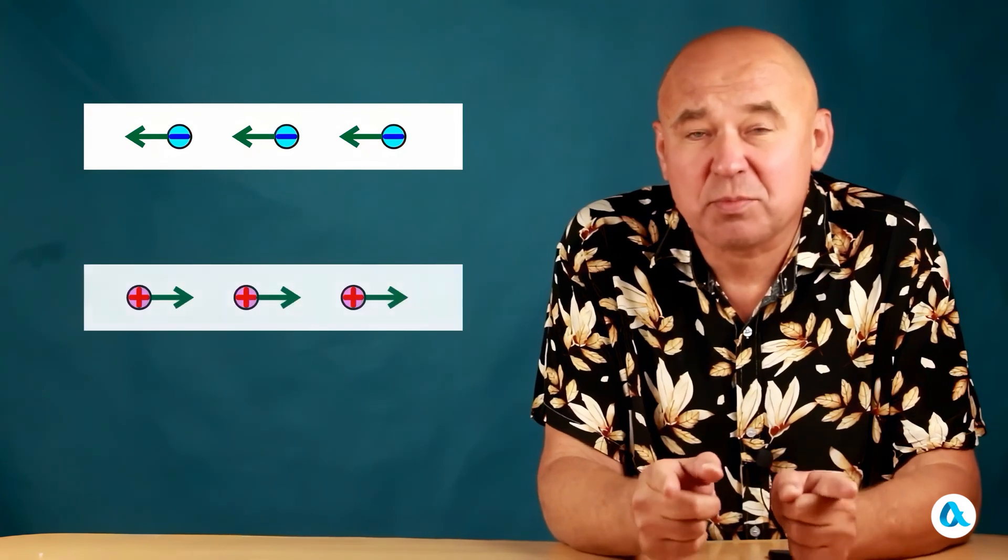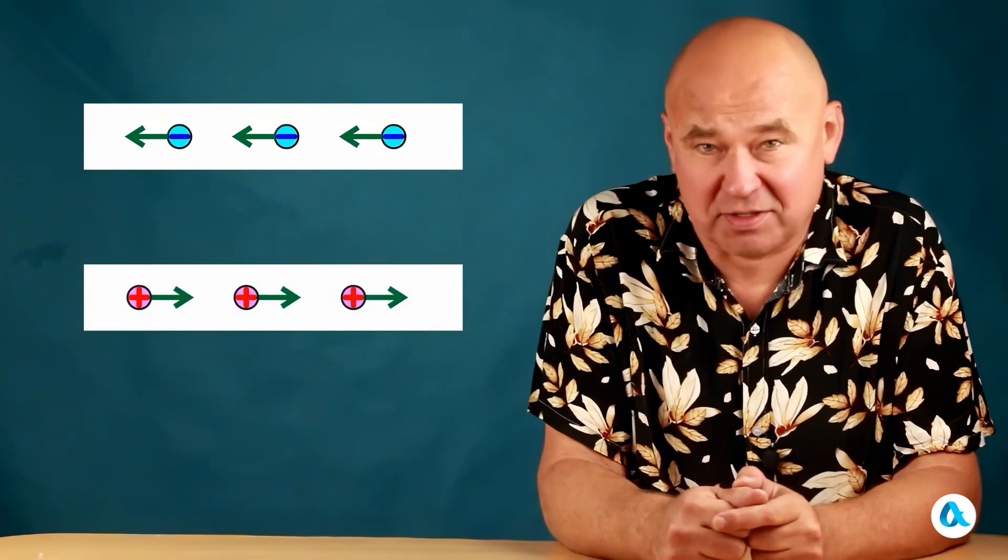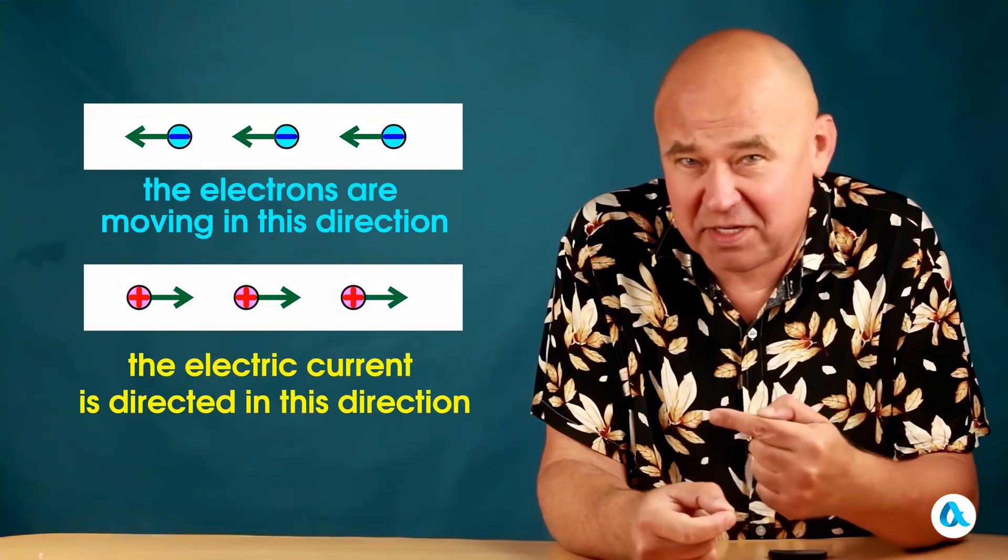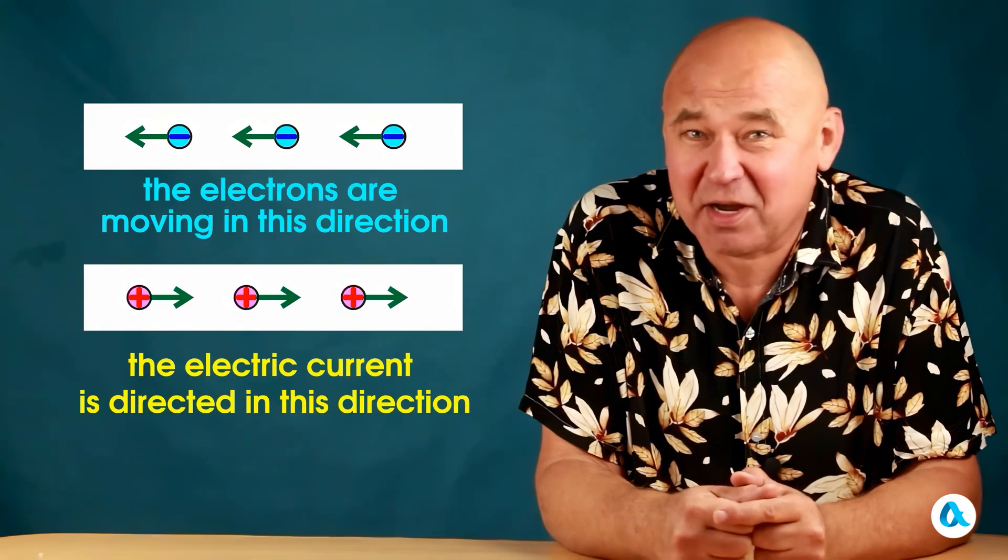And there is a moral here. And it is that since we are dealing with physics, we need to distinguish between models and reality. And if in reality, negatively charged electrons move through a conductor in one direction, then in the model we can quite imagine the imagined movement of positive charges in the opposite direction. And say that the direction of this movement is the direction of the electric current.